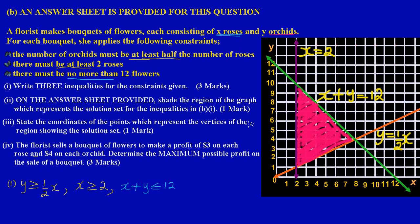In part three, they ask us to state the coordinates of the points representing the vertices of the region shown in the solution set — another easy one mark. What we're going to do is look for the vertices of the triangle we just shaded. The vertices are the points where the lines intersect, and there are three such intersection points bounding the region.